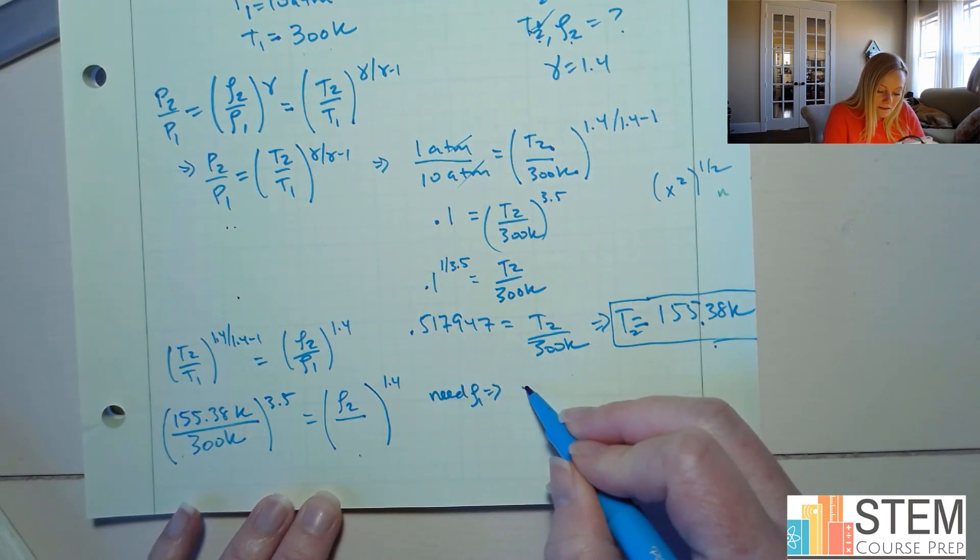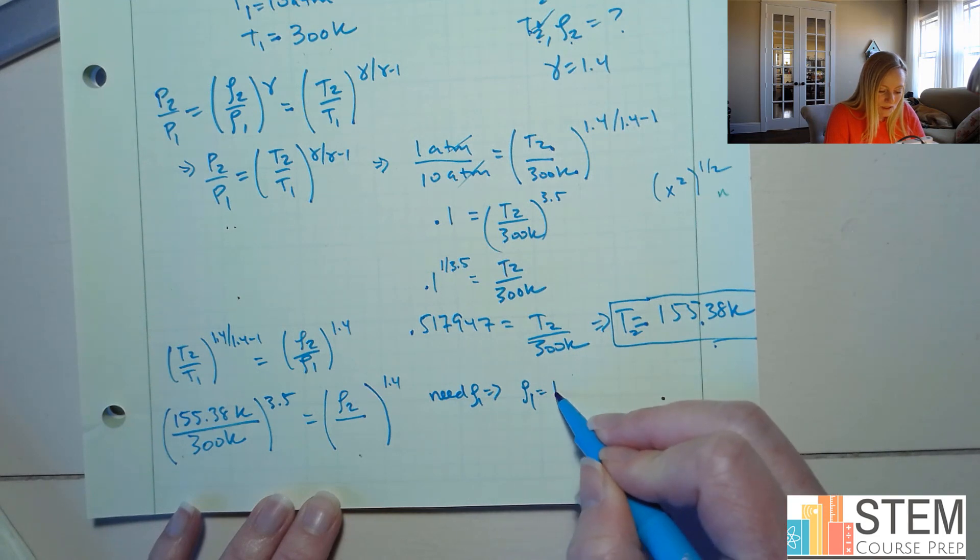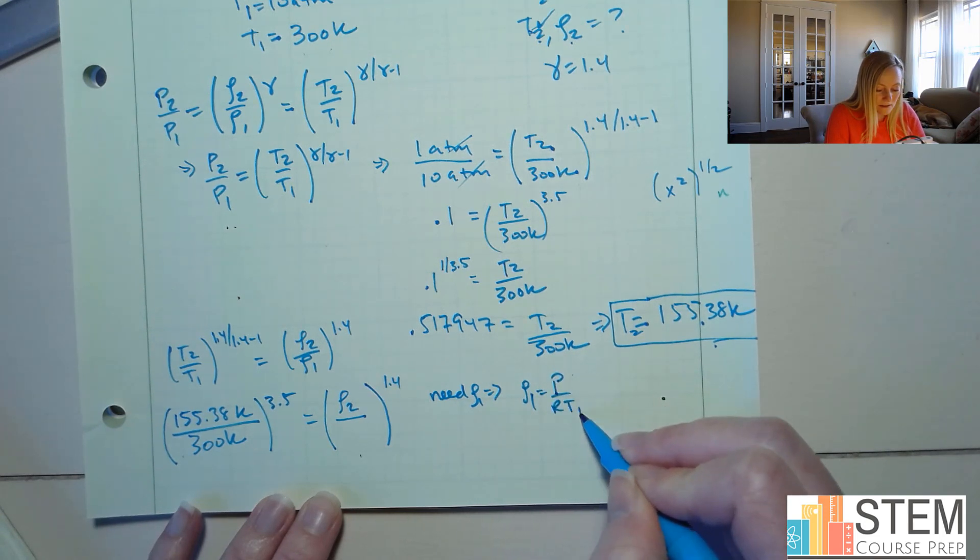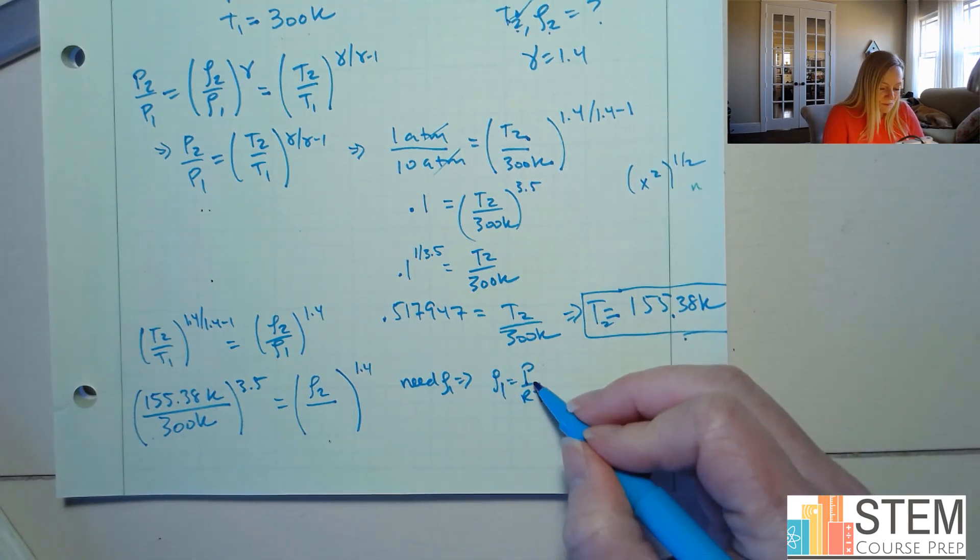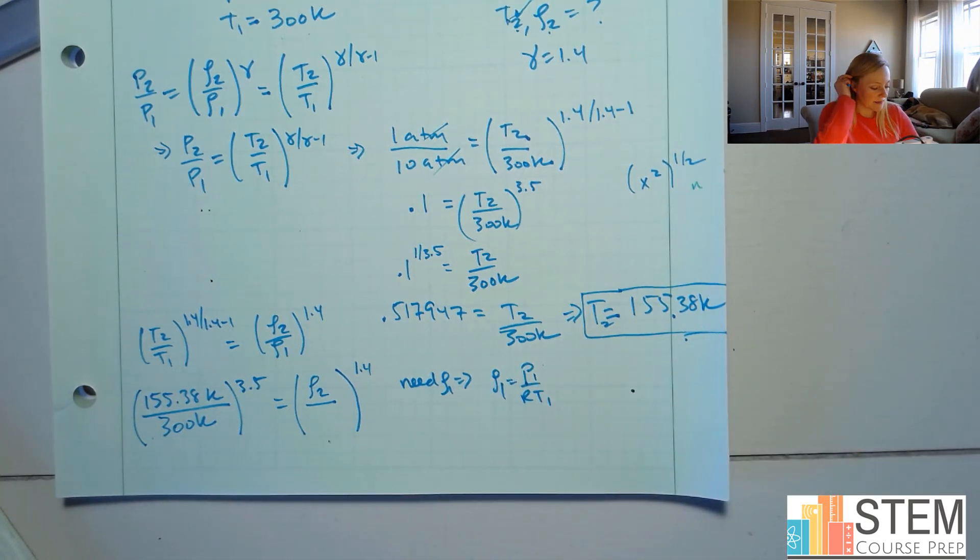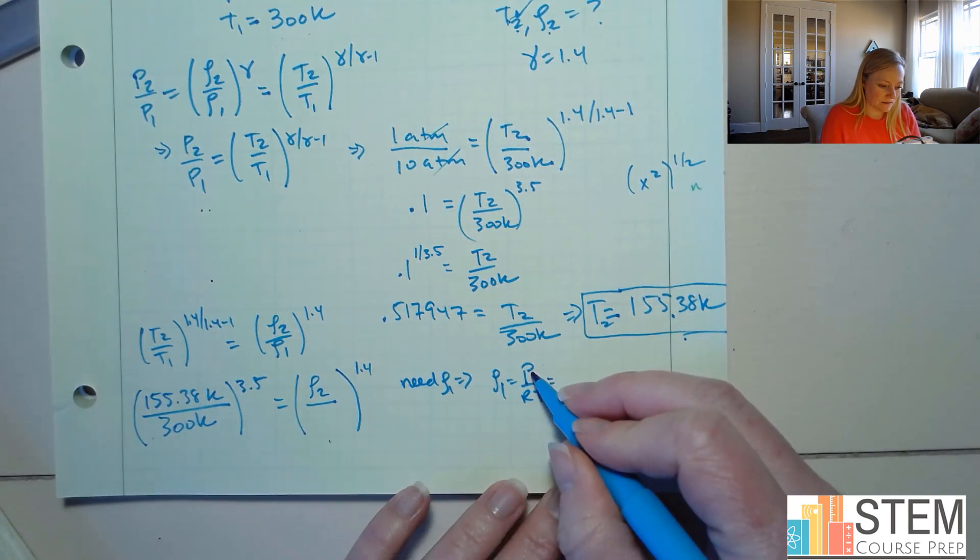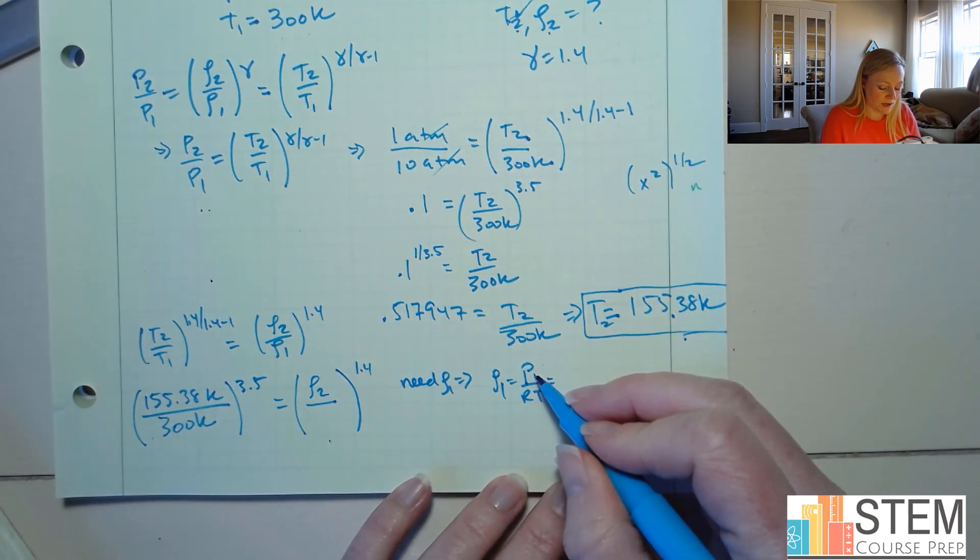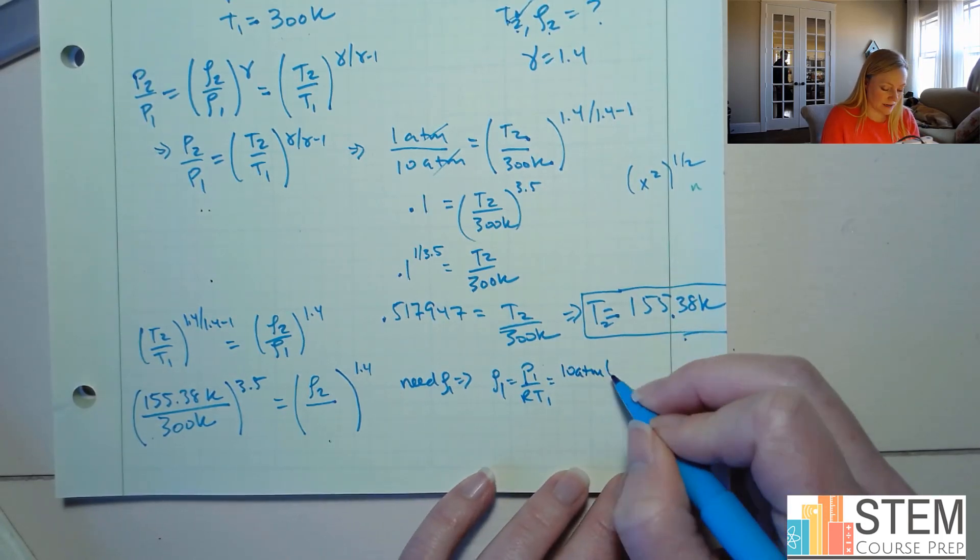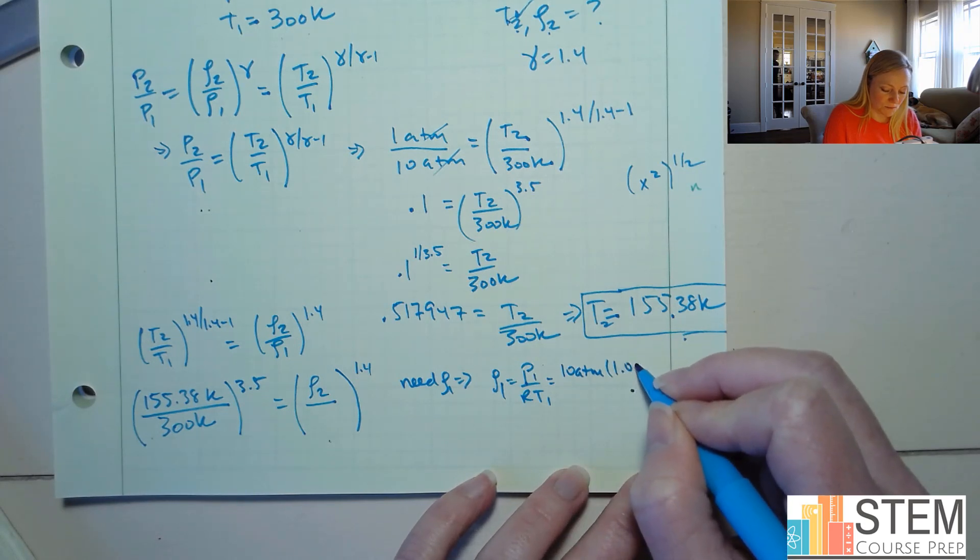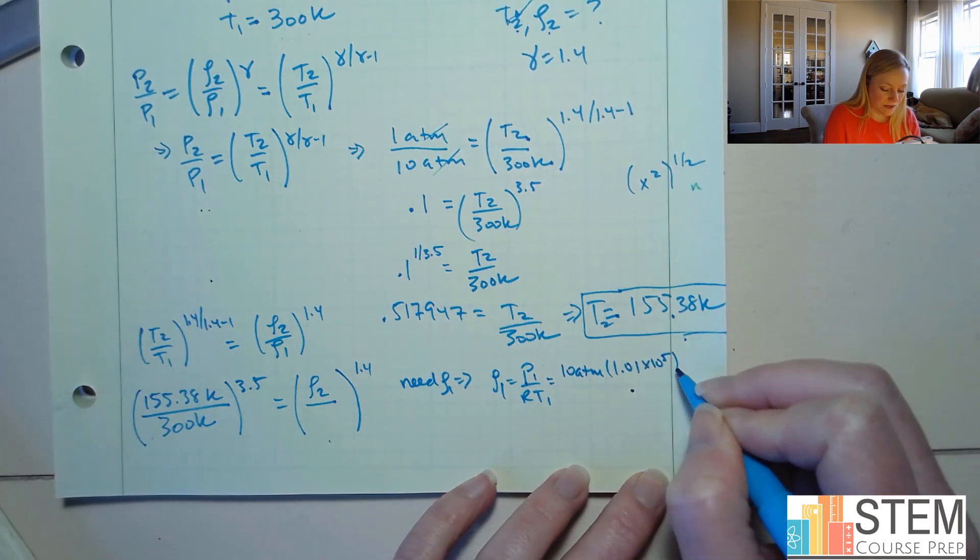All right. Now, I'm just going to use that equation right there. All right. So a simple equation, we'll just plug in our values, and then we'll have our density. So our pressure at 0.1 is 10 atmospheres. All right, I need to convert that over, so let's multiply that by 1.01 times 10 to the 5th,